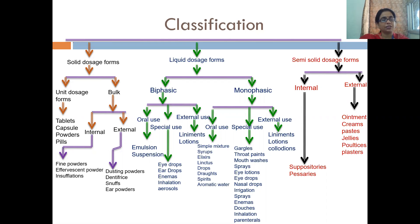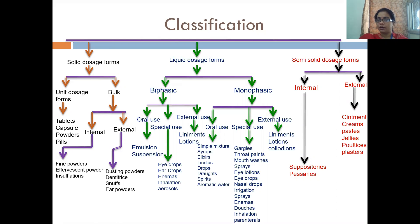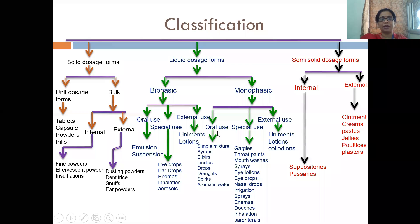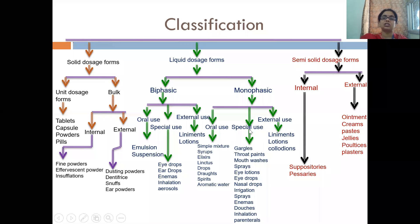If your internal phase is solid, then we use suspension. And if your internal phase is liquid, then we use emulsion. Now, in the monophasic system, we divide it into three categories: first is oral use, second is external use, and third is special use — meaning not oral or external.